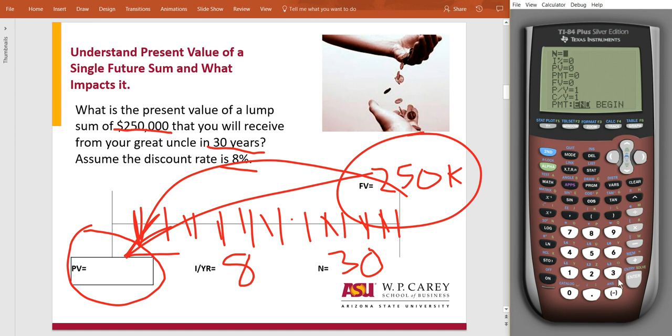Okay, so let's go over to our calculator. Start with N. N is 30 for 30 years. This is going to be in 30 years. I is 8%. Present value, we don't know how much that is worth right now, today.